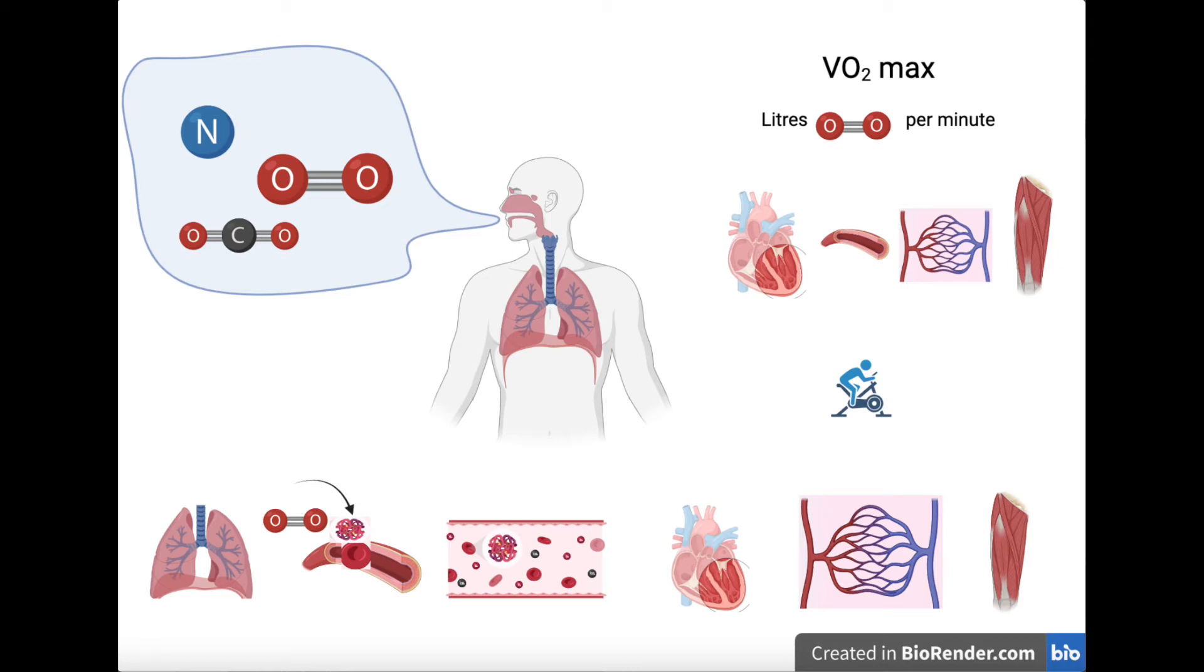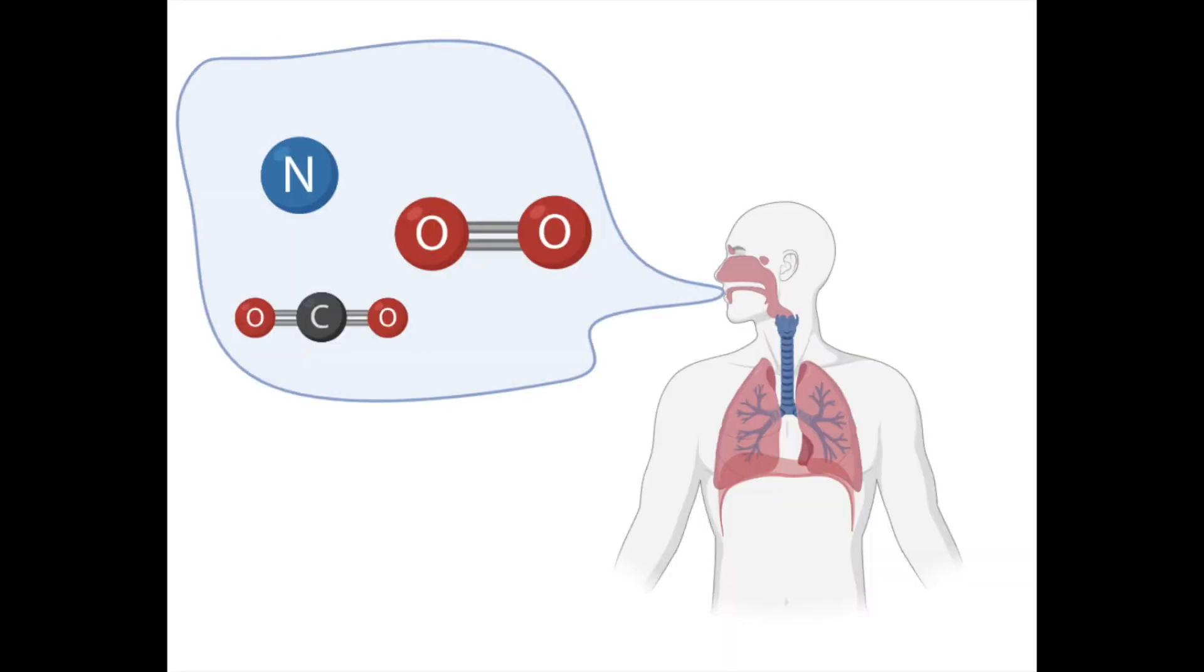VO2max explained in two minutes. When we exercise, we inhale air from the surrounding environment. This consists mainly of nitrogen, a very small amount of carbon dioxide, and most importantly for human health, oxygen.